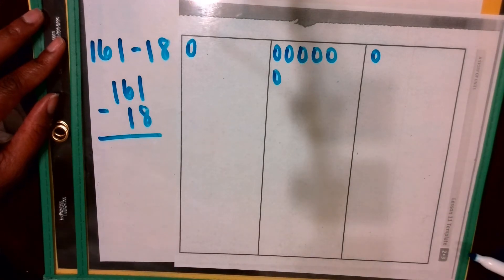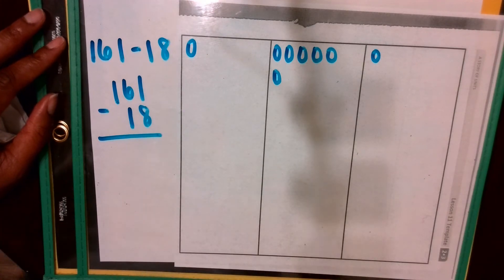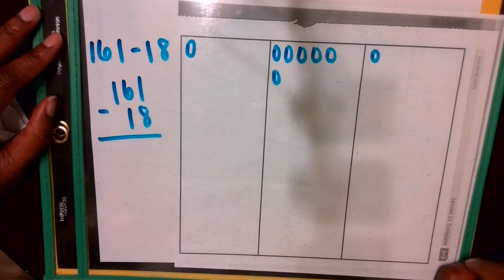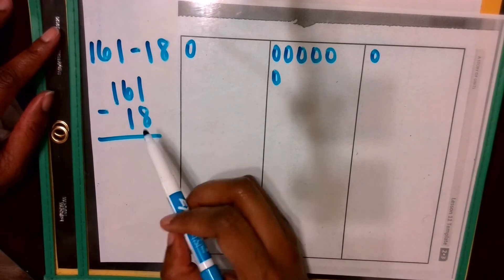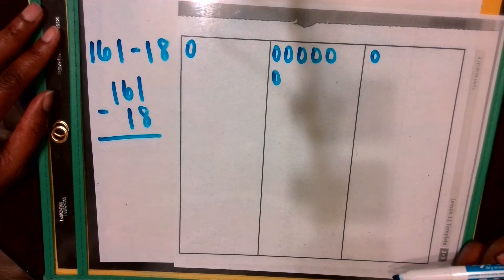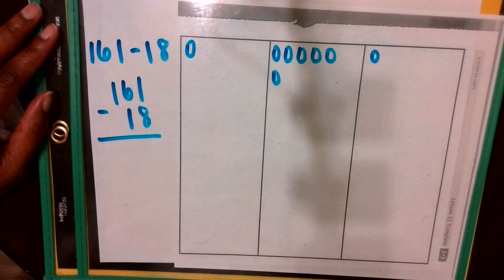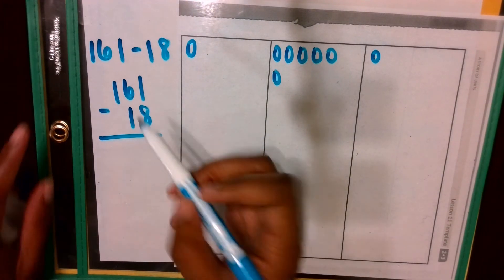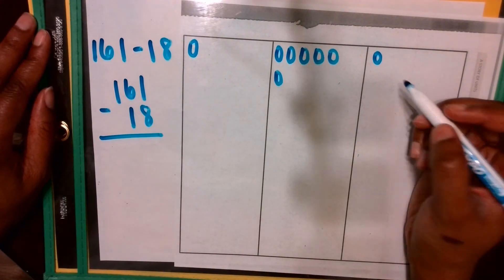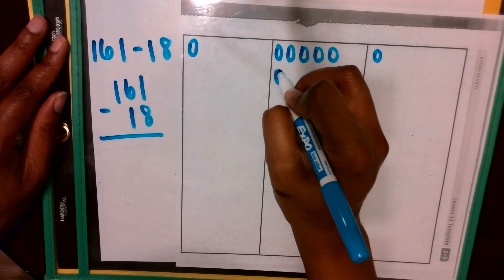Now, I must subtract my part. That's right. How many ones do I have in 18? Yes, 8. So, can I take 8 from 1? No, that's impossible. So, I must unbundle or decompose a 10. That's right.